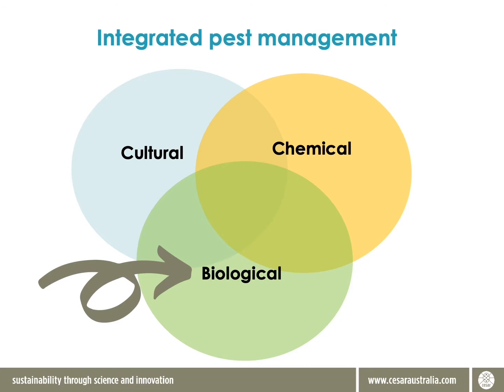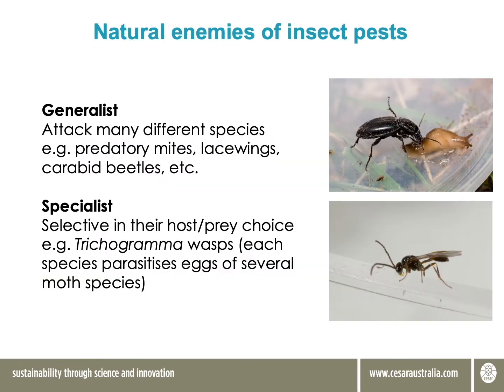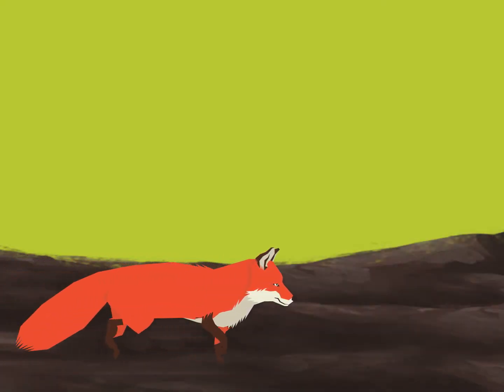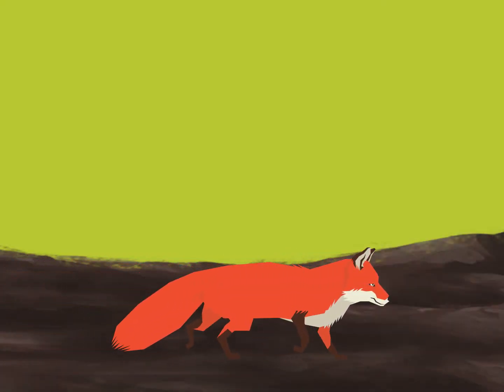In the case of natural enemies, at a high level we have generalists and we have specialists. Generalists are those that aren't so fussy with what they eat — they all attack a really broad range of prey. Think about a fox, for example; we know they tend to eat whatever they can find.